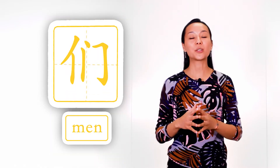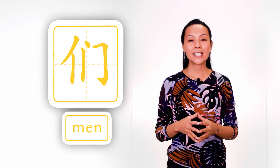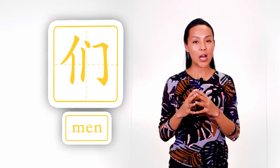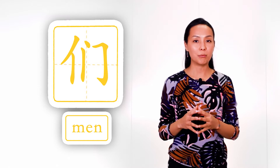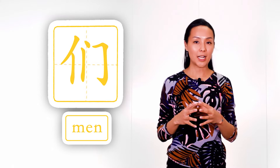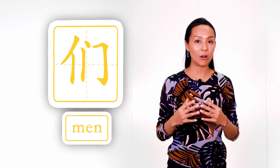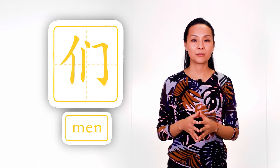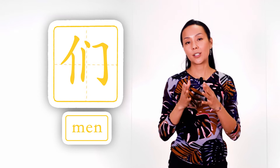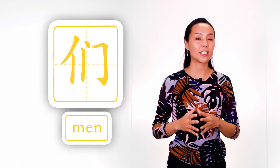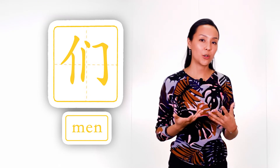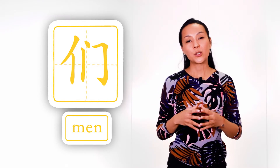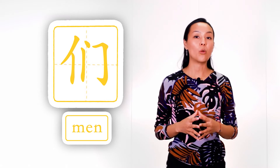The last example is not a word but an affix — 们 (men) — which we add to different pronouns, for example 我 (I) becomes 我们 (we). This character has a person standing near the doors. Imagine you are at home and you see a person in front of your door; in this case you are not alone — you become 'we,' 我们 (wǒmen).